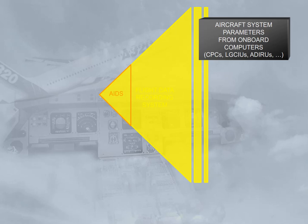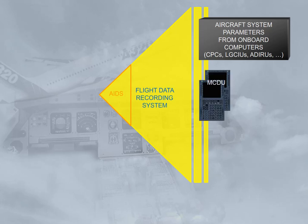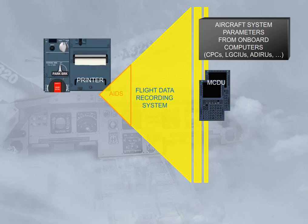The aircraft integrated data system (AIDS) monitors various aircraft system parameters transmitted by all onboard computers through the flight data recording system, which acts as an interface unit. The AIDS generates system reports in order to make maintenance easier, by means of pre-programmed reports from or selected on the MCDU. The AIDS may print reports automatically, or if the AIDS print push button is used.